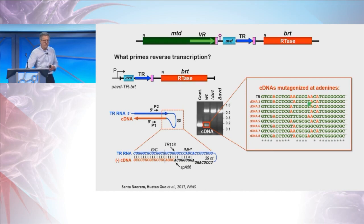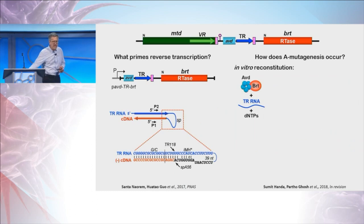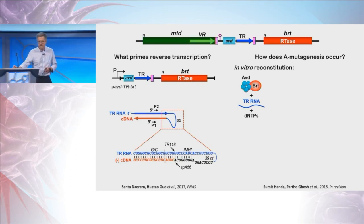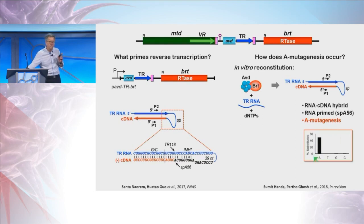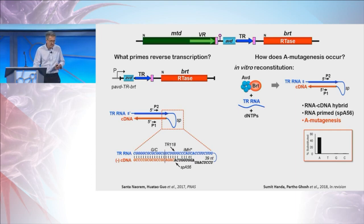Taking a closer look, we noticed a very unusual structure: an RNA derived from the template region was covalently linked to these cDNA molecules. Meanwhile, Sumit Handa in Partho Ghosh's lab had succeeded in purifying an active enzymatic complex — the reverse transcriptase with this variability determinant. When supplied with RNA and dNTPs, it synthesizes this exact same RNA-DNA hybrid primed at exactly the same position. Importantly, we also see adenine mutagenesis under these in vitro conditions with purified components, telling us that this adenine-specific infidelity is inherent in the enzymatic process itself.